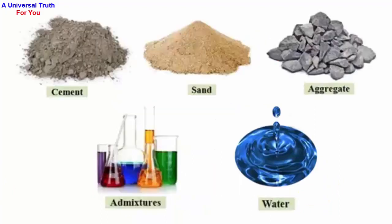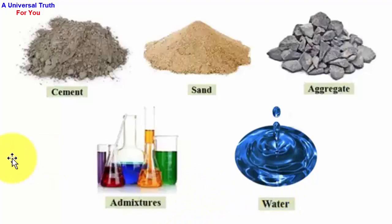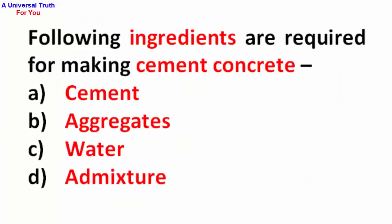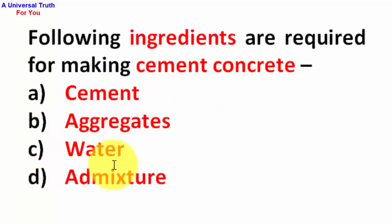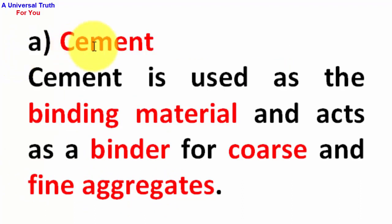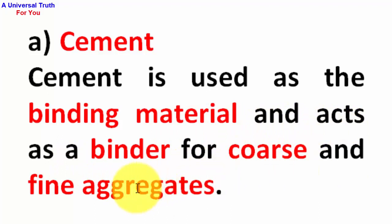Here is a picture of cement, sand, aggregate, admixtures, and water. The following ingredients are required for making cement concrete: A) cement, B) aggregate, C) water, and D) admixture.